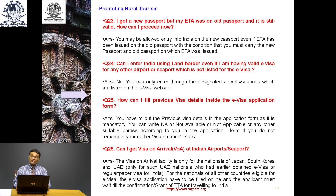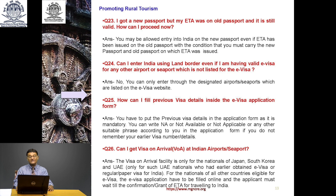If you got a new passport but your ETA was on the old passport and it is still valid, you may be allowed entry into India on the new passport — with the condition that you must carry both the new passport and the old passport on which ETA was issued. Can I enter India using a land border even with a valid E-Visa? No — you can only enter through the designated airports and seaports listed on the E-Visa website. For previous visa details in the application form, write N/A or 'not applicable' if you do not remember earlier visa details.